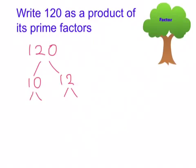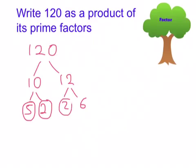We then split each one of these into two numbers that multiply to make them. So we have six and two here, and five and two here. Five is a prime number so we circle it, two is also a prime number so we circle it, and this two is also a prime number so we circle that too. The six can be broken down further into a three and a two, and then we circle both of those as well.